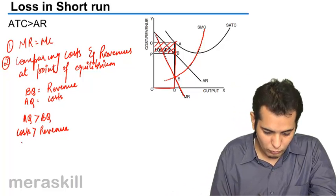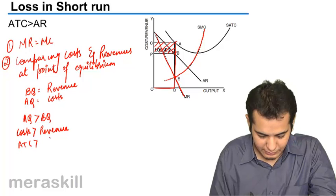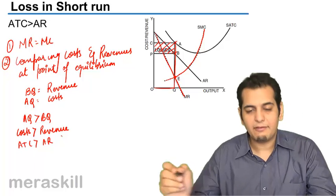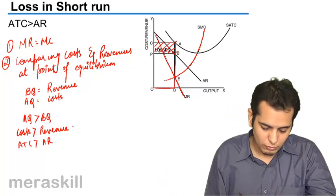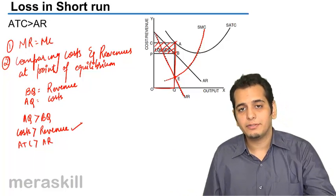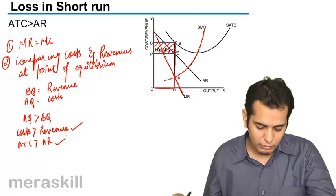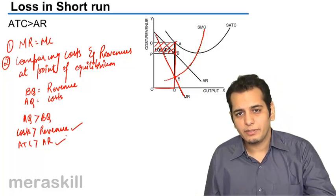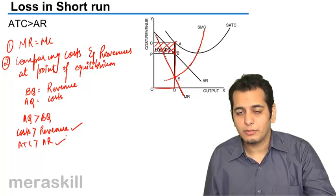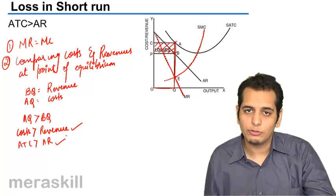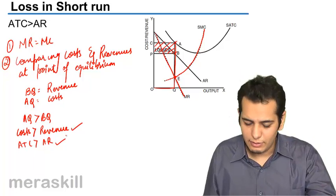We can also present it as ATC being greater than average revenue. You can call it cost being greater than revenue, or average total cost being greater than average revenue. This all means the same thing: the firm is incurring losses because the cost is more than the revenue.